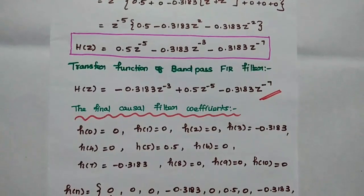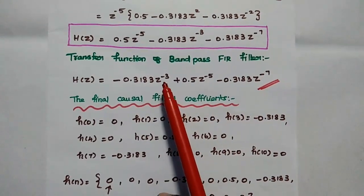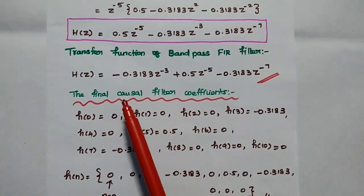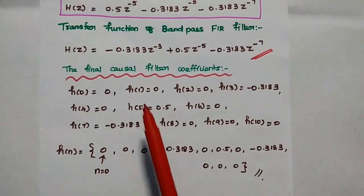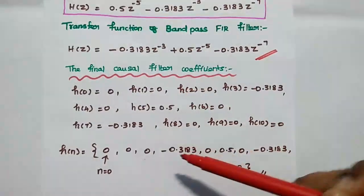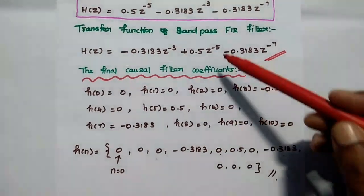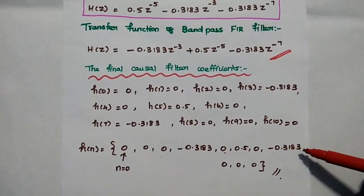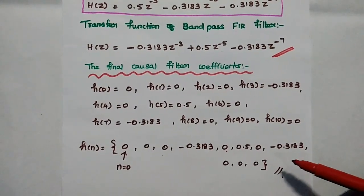The transfer function of the given bandpass FIR filter is H(z) = −0.3183z^(−3) + 0.5z^(−5) − 0.3183z^(−7). From this transfer function, we can obtain the actual causal FIR filter coefficients. Since the function starts at z^(−3), the coefficients are: h(0)=0, h(1)=0, h(2)=0, h(3)=−0.3183, h(4)=0, h(5)=0.5, h(6)=0, h(7)=−0.3183, h(8)=0, h(9)=0, h(10)=0. These are the causal FIR filter coefficients. Thank you.